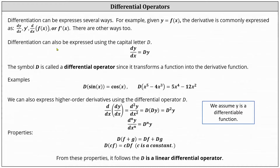We can express differentiation using the capital letter D. For example, dy/dx can be expressed as capital D y. Just keep in mind, capital D y doesn't mean capital D times y — it indicates the first derivative of y. The symbol capital D is called a differential operator since it transforms a function into the derivative function. For example, capital D of sine x equals cosine x, and capital D of x to the fifth minus 4x cubed equals 5x to the fourth minus 12x squared.